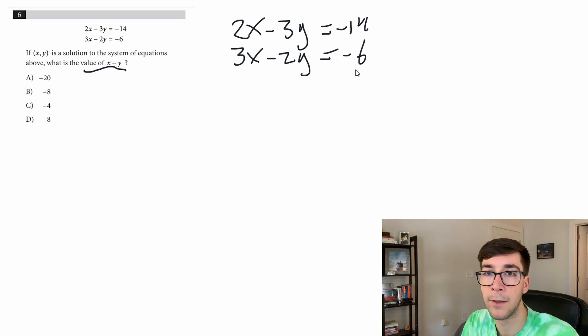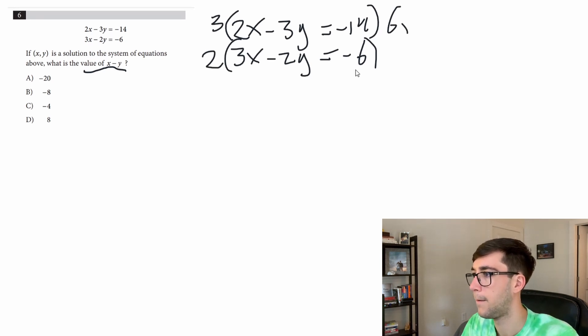So multiply this whole equation by 3, this whole equation by 2, and remember the whole equation has to get multiplied by that. So we get 6x minus 9y equals negative 42, and this one becomes 6x minus 4y equals negative 12.